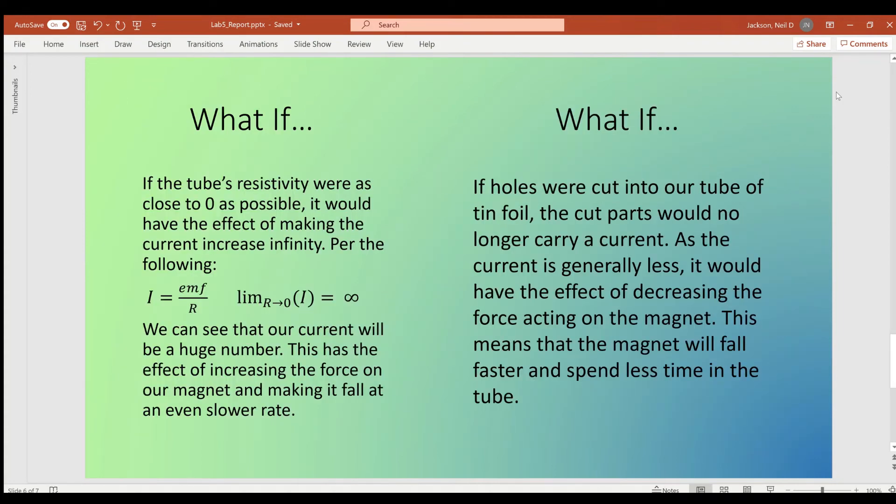For our first what-if question, we are posed with what happens if the resistivity of the tube were to essentially go to zero. We know that the current through the tube, which is what's essentially driving the force on the magnet, is equal to our EMF over the resistance. By taking the limit of our current as the resistivity approaches zero, you can see that that limit is going to evaluate to infinity.